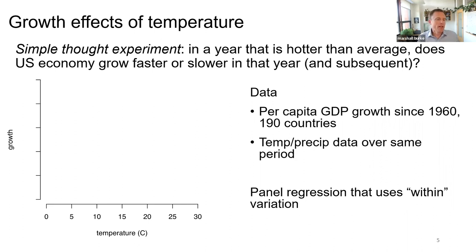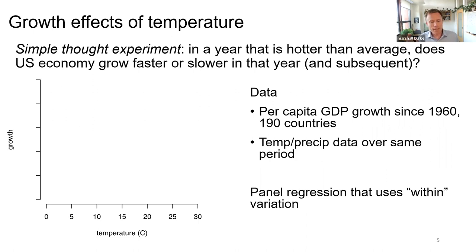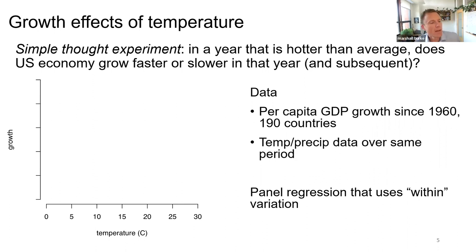We don't produce much in Antarctica partly because it's very cold — warm it up and maybe we can produce more. At the other extreme, in very hot places, you'd expect productivity to fall as temperatures increase further. That would suggest a hill-shaped relationship between temperature and output.